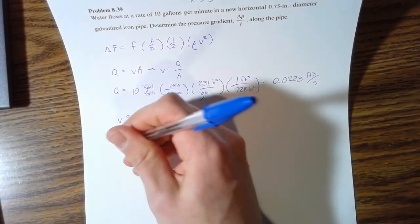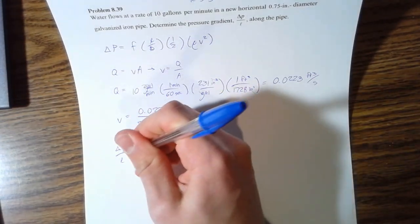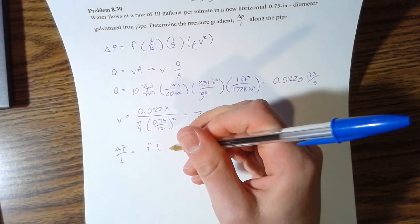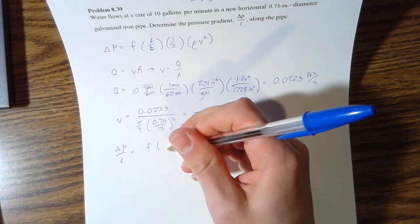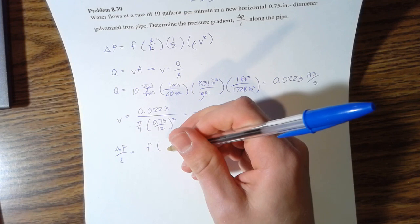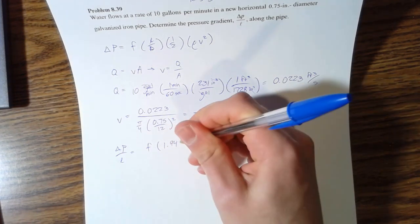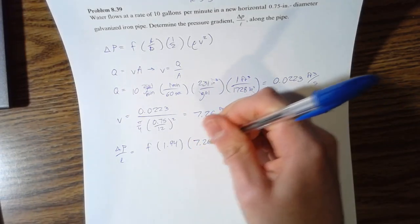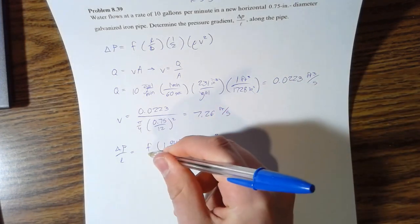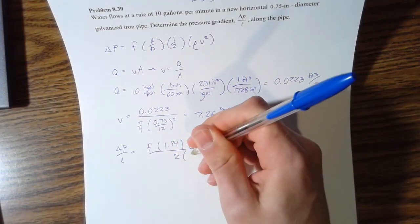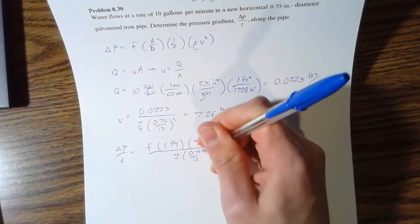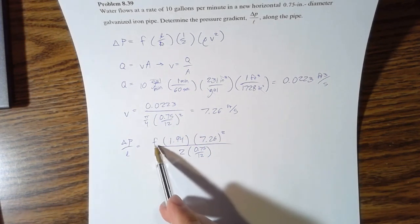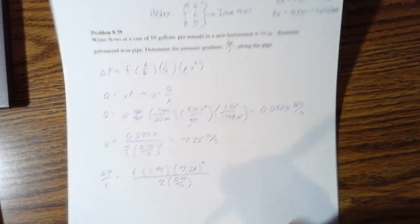So that's the velocity that we can use, and we'll go ahead and solve this equation for what we're actually looking for. So delta P over L is equal to that friction times the density of water, which is 1.94 slugs per foot cubed, multiplied by our velocity squared, which is 7.26 squared, divided by 2 times our diameter, 0.75 again over 12 because we want that in feet.